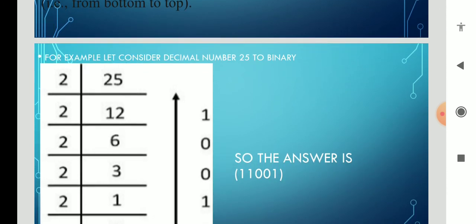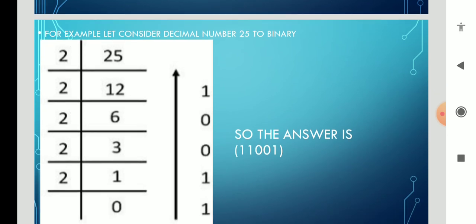We have the decimal number 25. How is it converted into binary? 25 is divided by 2, then we have the remainder 1, then the quotient is 12. Again it is divided by 2, then the remainder is 0, the quotient is 6. Again that is divided by 2, then remainder is 0, quotient is 3.